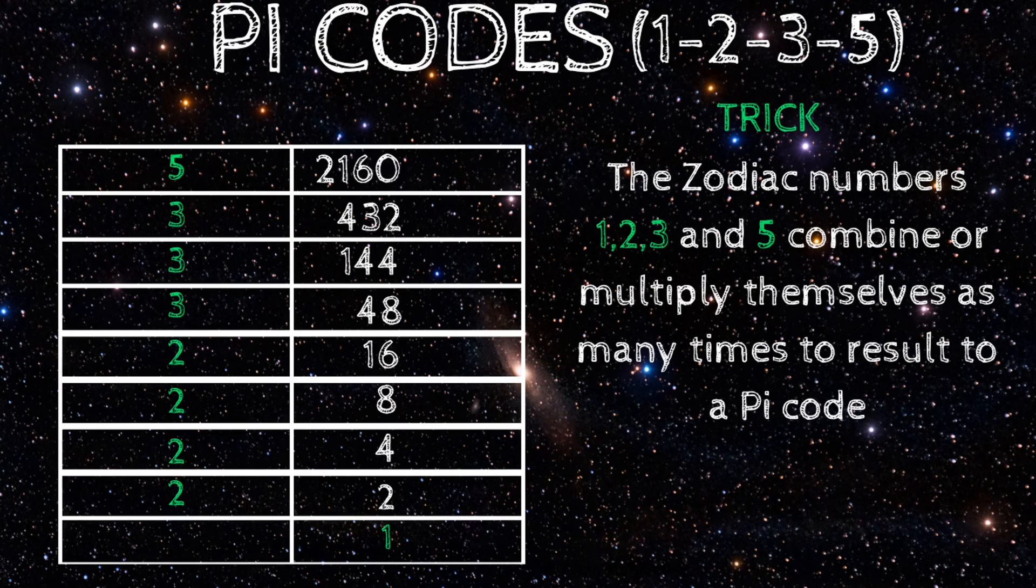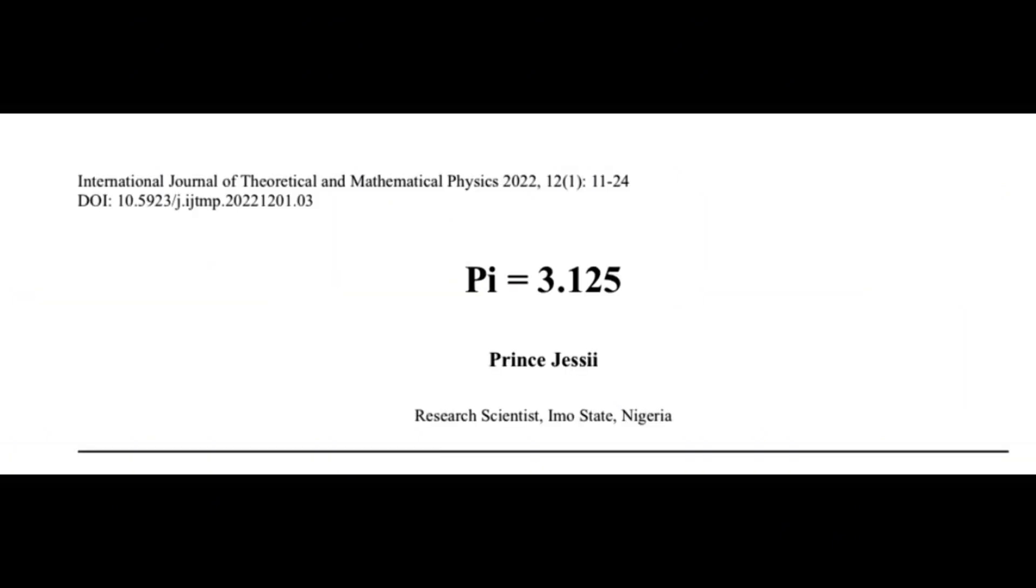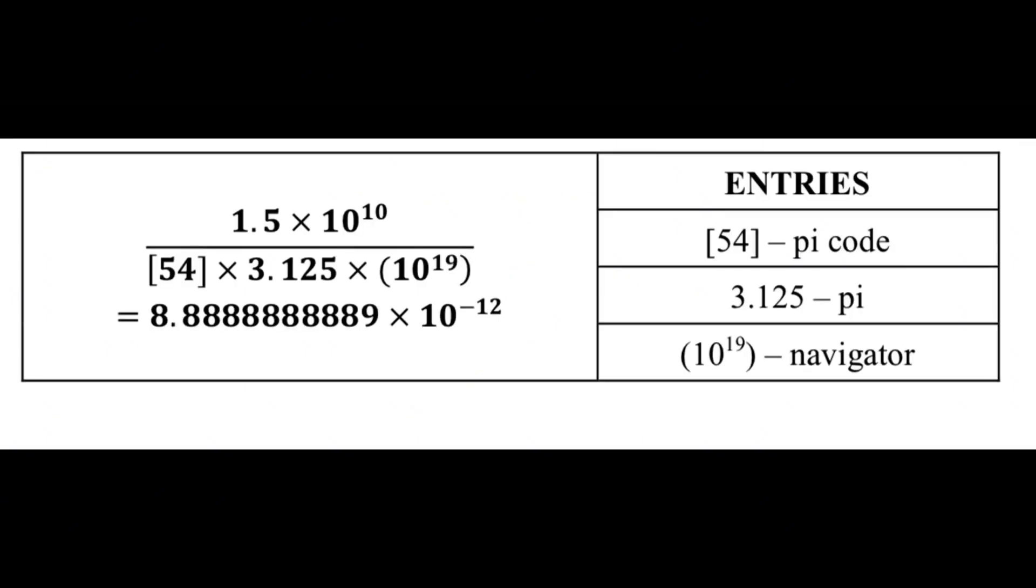Now, these pi codes can be inserted into the God equation as entries. If inserted as entries, the result produces physical constants of the universe. Let's try it out. In the scientific paper titled Pi equals 3.125, Prince Jesse revealed how we can use pi codes as entries alongside a navigator in the God equation to get a physical constant in this format.